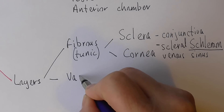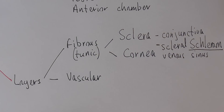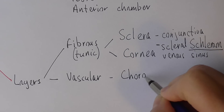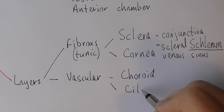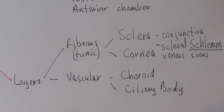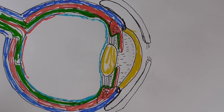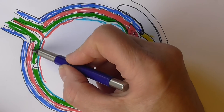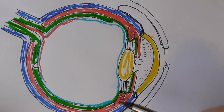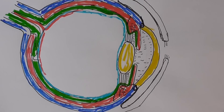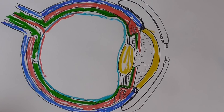The next layer is the vascular layer — a lot of the blood vessels go through this layer. We have the choroid, the ciliary body, and also included in this is the iris. As you see here, this layer is shown in red because it's vascular. The choroid is around here, but it's continuous with the ciliary body, which is continuous with the iris. So it's all one continuous vascular layer, shown in red on the diagram.